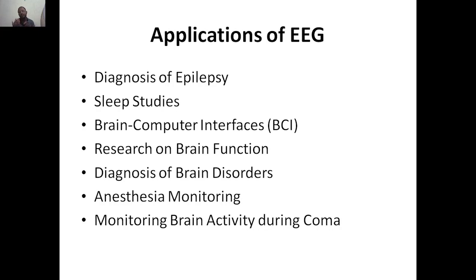Next is research on brain function. How exactly our brain functions completely — 100 percent — we have never fully understood despite so much advancement in technology. A lot of research and millions of dollars in funding have been spent to study brain function. The basic activity is signal transmission, which generates electrical impulses. To check those impulses, we need EEG. So EEG is a must in research on brain function.